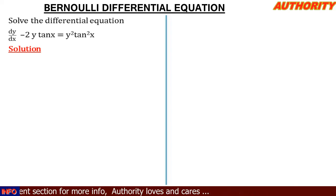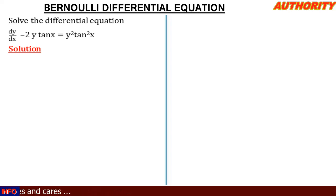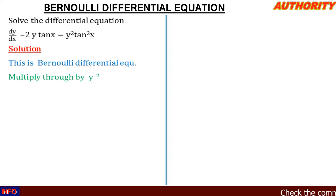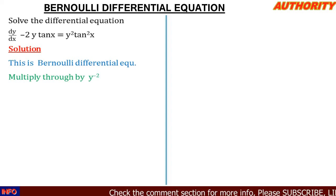What we do here is try to make this equation look like a linear differential equation by removing this y² term. To remove y², we multiply by its inverse, which is y raised to the power minus 2. So we are going to multiply everything by y⁻².